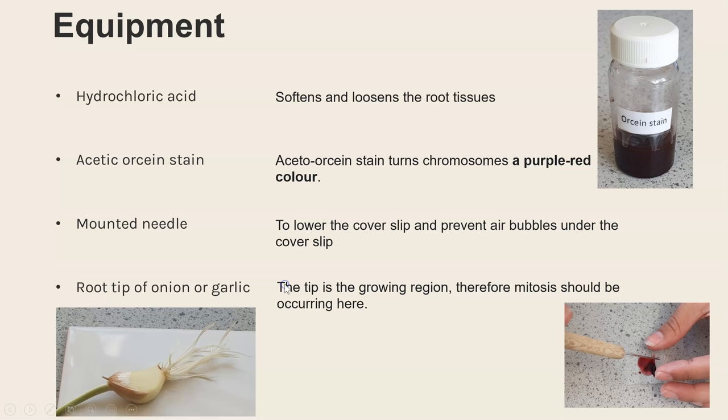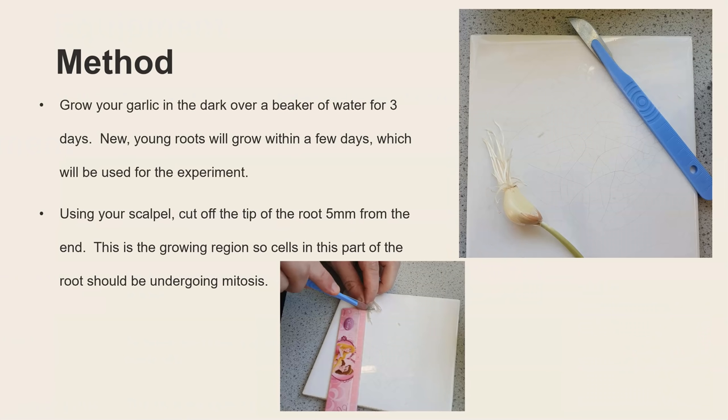And lastly why do you use the root tip of and it's an onion or garlic but the key thing is the root tip and it's just last five millimetres. That is the growing region of the root so that means it'll be in that section that cells will be dividing and therefore will be undergoing mitosis and that's what we need if we want to view cells in mitosis.